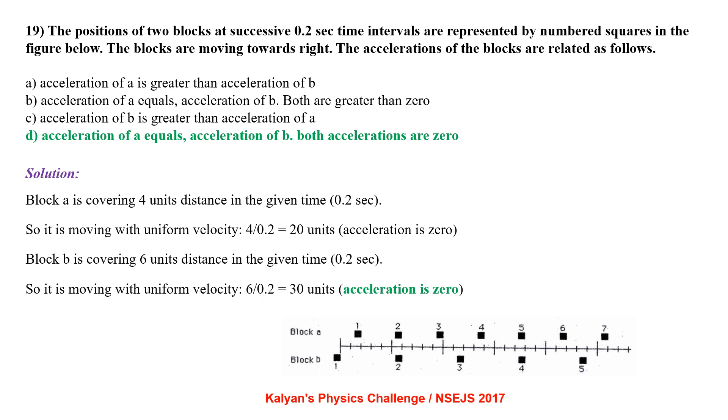Block A is covering 4 units distance in the given time that is 0.2 seconds. So, it is moving with uniform velocity of 20 units. So, its acceleration is zero. Block B is covering 6 units distance in the given time. So, it is moving with uniform velocity of 30 units. So, its acceleration is also zero.